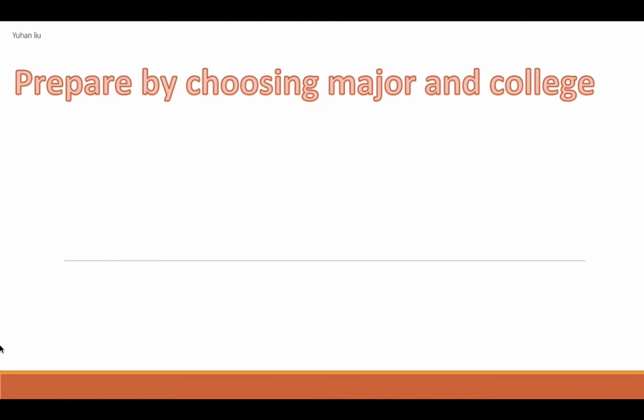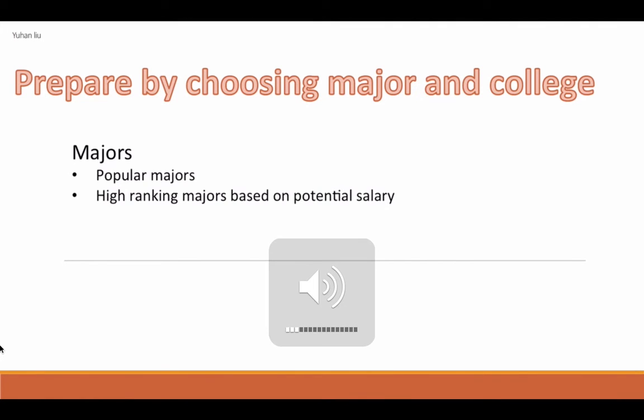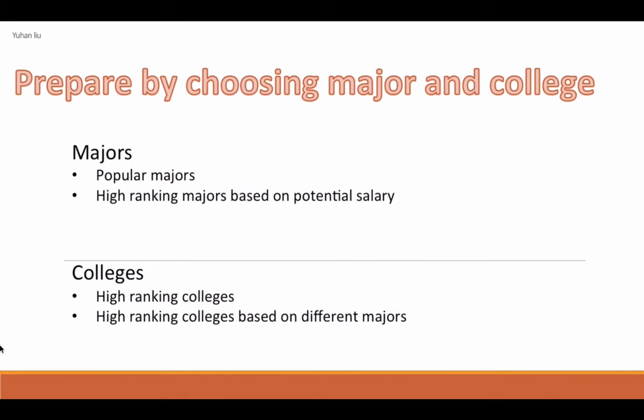In the first part, we focus on choosing major and college. Major and college are students' priority concern for the university. In this part, we talk about the impact of choosing different majors and colleges on future jobs apply. With two authoritative report websites, payscale.com and US News, we really get a lot of detailed and precise answers about college and job, which could help international students understand American market situation more deeply.